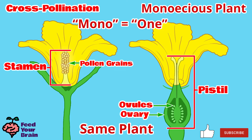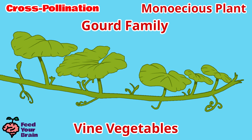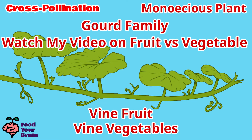Therefore, you only need one plant to obtain fruit. This type of monoecious plant includes the gourd family, which are vine vegetables — or technically vine fruits. Watch my video on fruit vs. vegetable, what is the difference, to learn why so many vegetables are actually fruit.